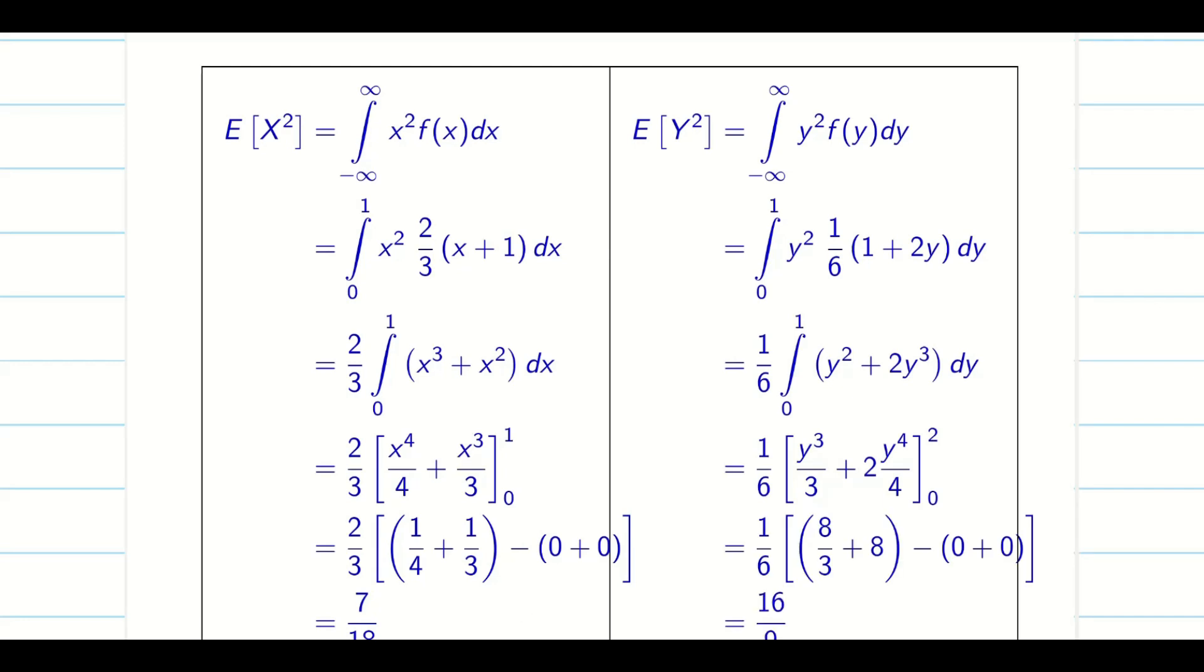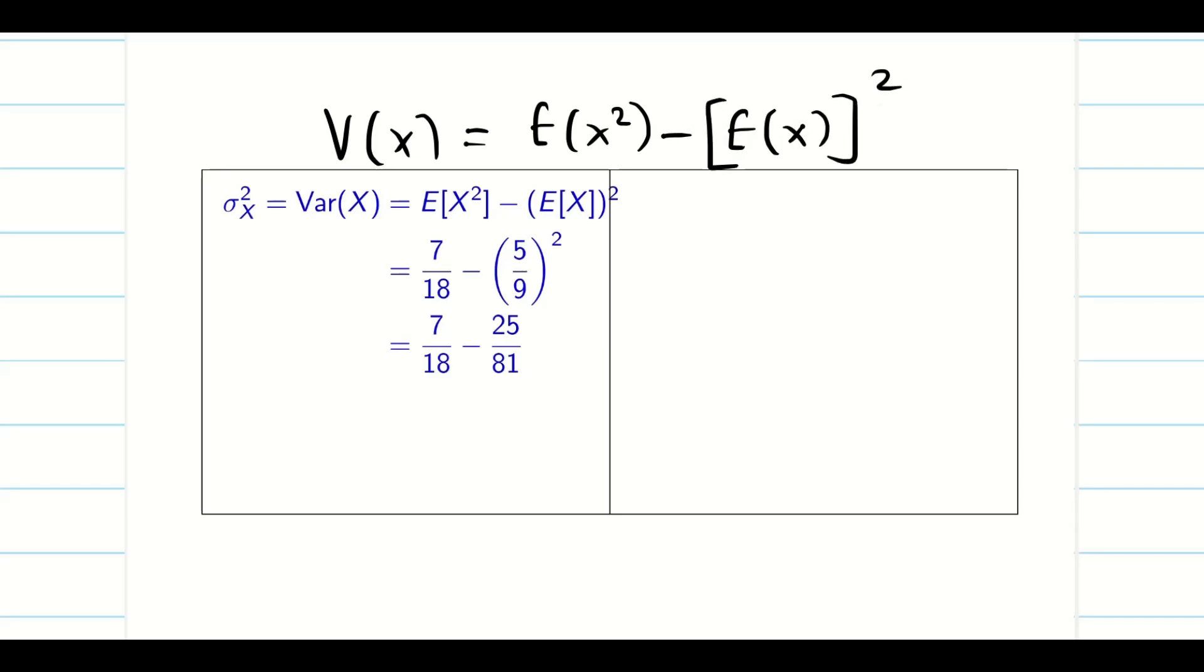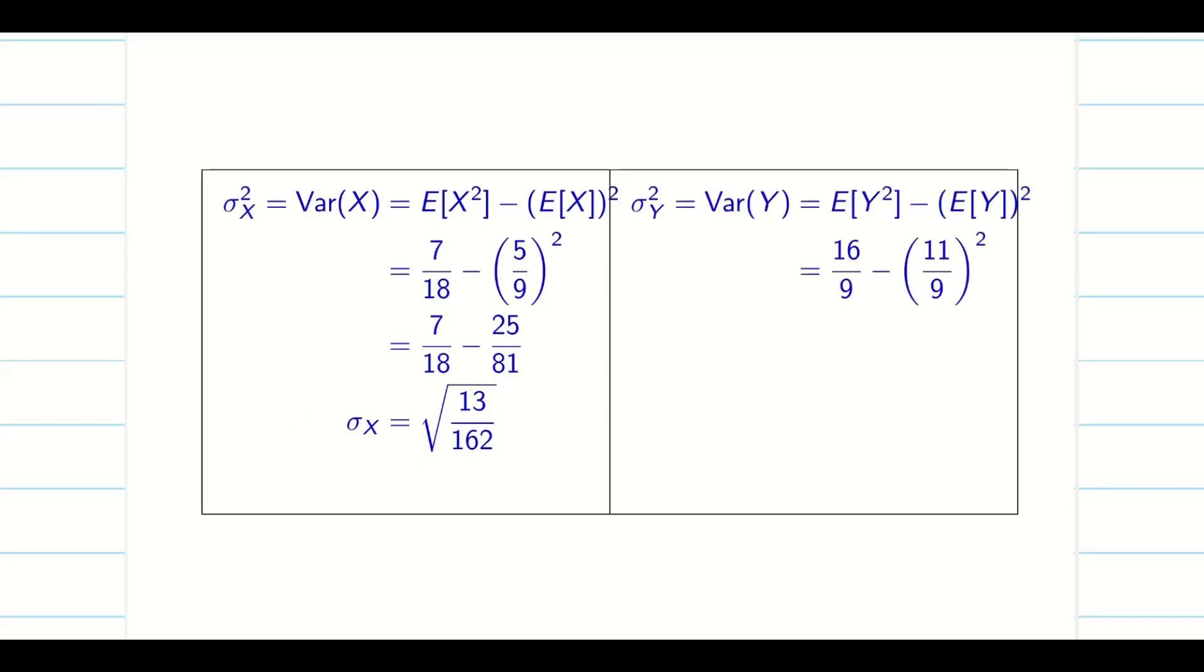Now I can find the standard deviation from the variance formula. My variance of x is E(X²) minus [E(X)]². Then standard deviation is always the positive square root of variance. In the similar way, I can find sigma y also.